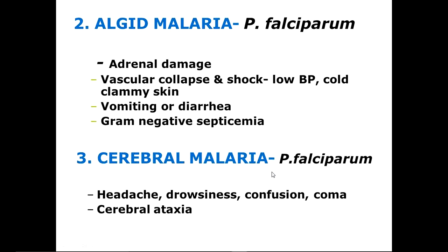Cerebral malaria: the pathogenesis is the same — surface changes of RBCs cause them to stick to the endothelial lining of blood vessel walls, forming a clot with obstruction of microcirculation and dysfunction of multiple organs. There is inadequate tissue perfusion in the brain vessels, resulting in headache, drowsiness, confusion, coma, and cerebral ataxia.